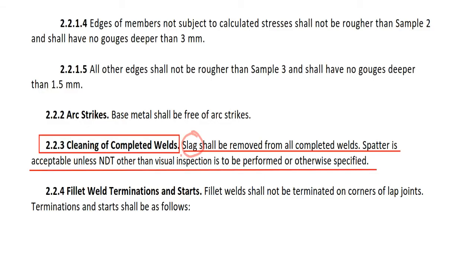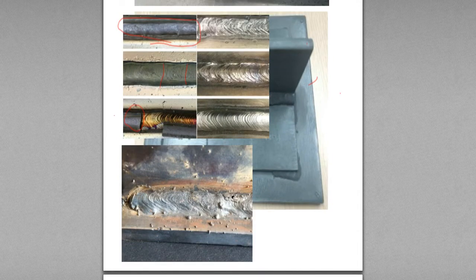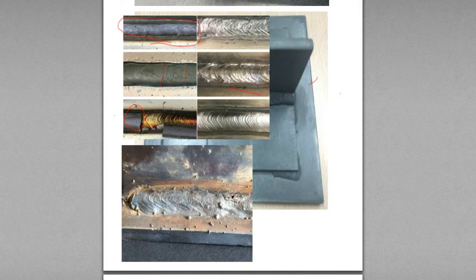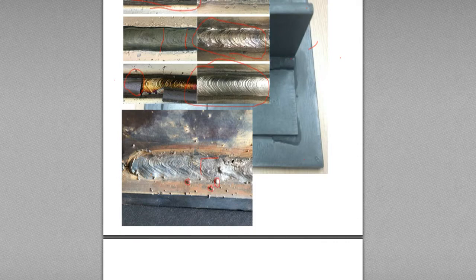Here it says slag shall be removed from all completed welds. And spatter — spatter is, after welding, these weldings are very clean, no spatters. But here, this is another SMAW welding, and the bead profile is not proper. It's not a beautiful bead. Here you can see small circular round spots. These are spatters.